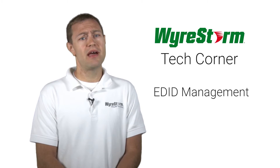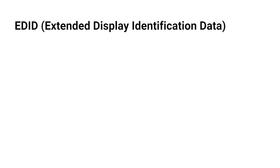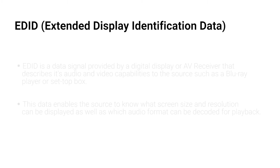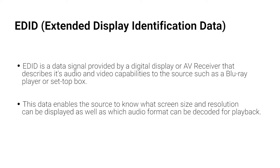What is EDID? EDID stands for Extended Display Identification Data. In short, it's a data signal provided by a digital display to describe its capabilities to a video source such as a Blu-ray player or set-top box. This is what enables a source to gather important information such as display size and pixel mapping data from the display it's connected to.